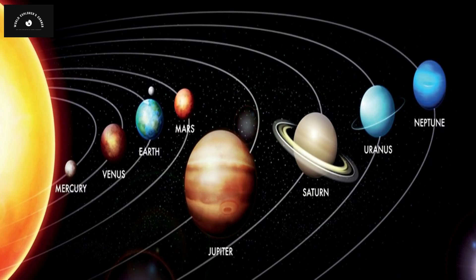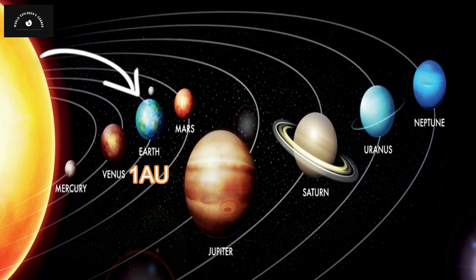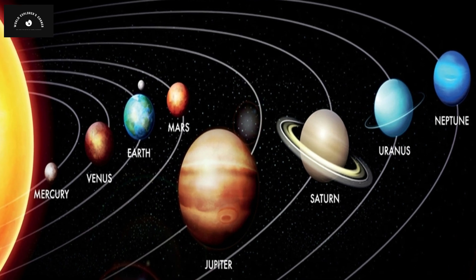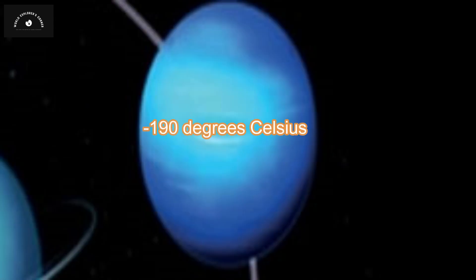Neptune, the farthest planet in our solar system, lies approximately 30 astronomical units away from the sun, where one astronomical unit is the Earth-sun distance. This vast separation results in temperatures plummeting to around minus 190 degrees Celsius.